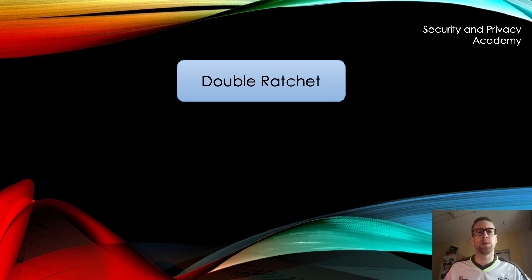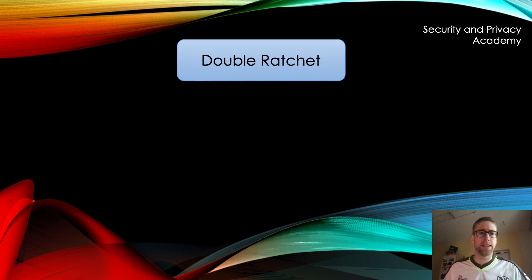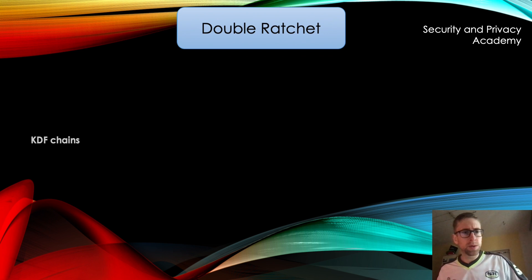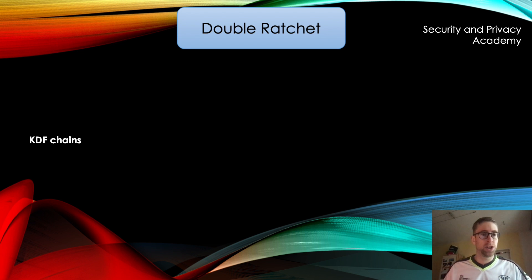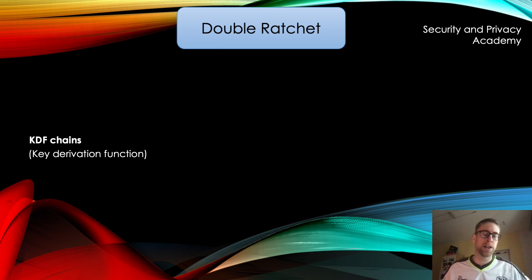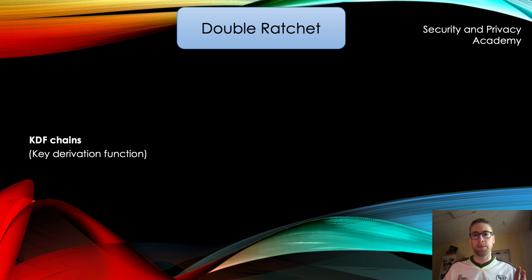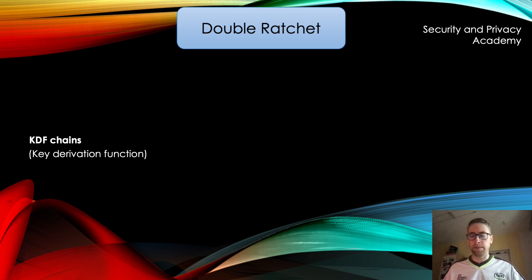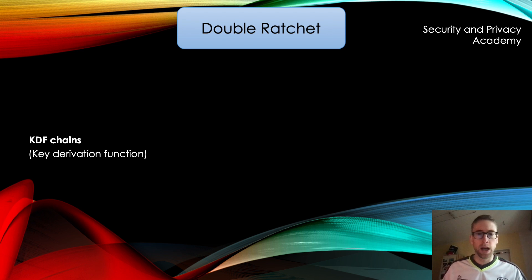Now let's take a look at the Double Ratchet Algorithm. The Double Ratchet Algorithm relies on KDF chains. A KDF is a key derivation function — a function used to generate symmetric keys from some input, such as a password. It's also used to make password cracking harder by hashing a password multiple times, but that's called PBKDF and is a subject for another video.